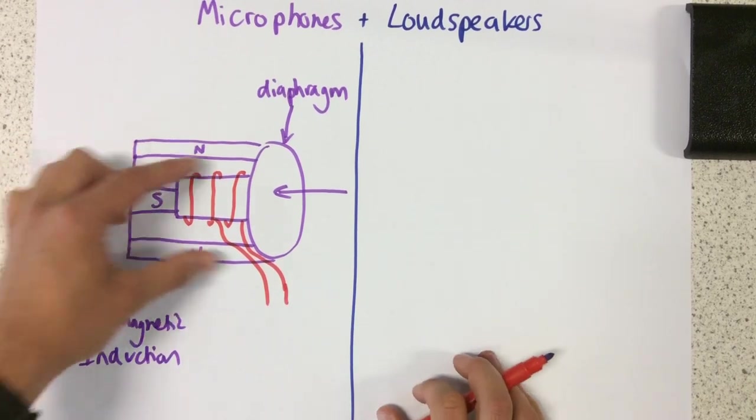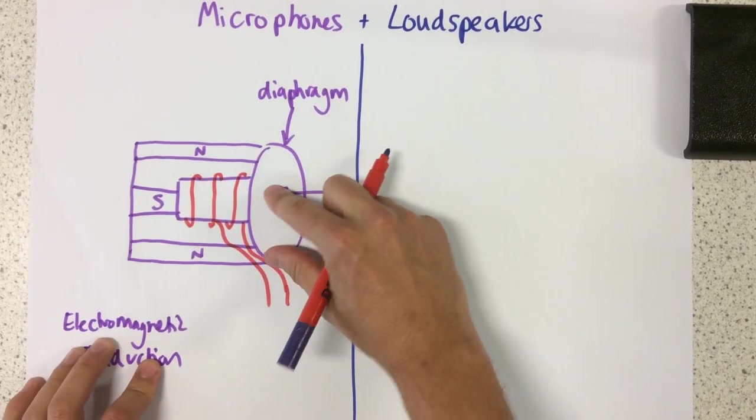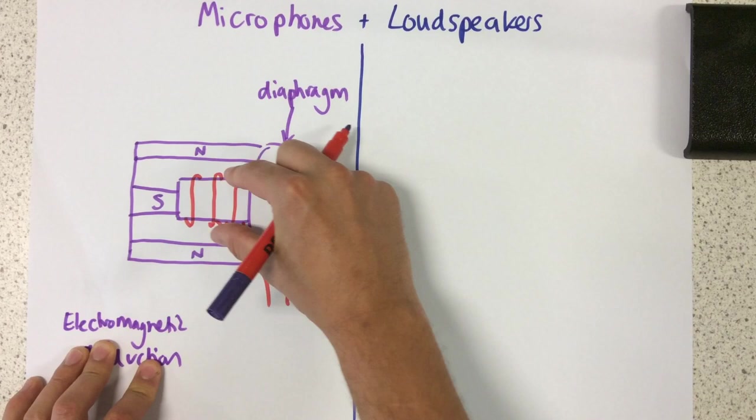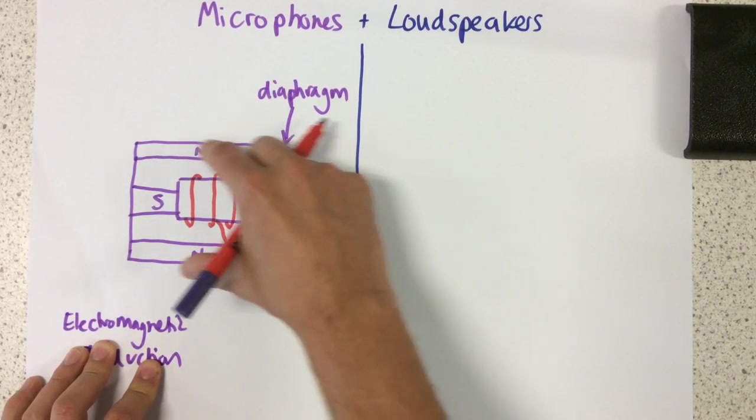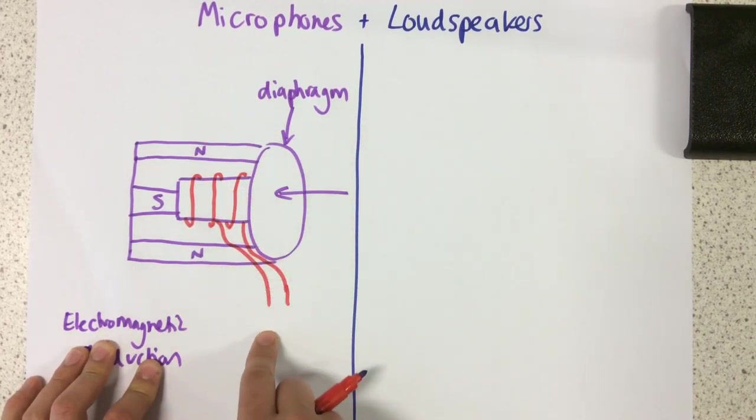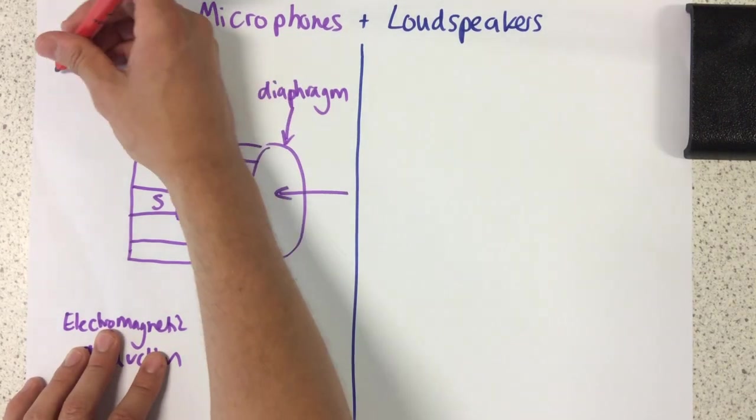That just means that we can create a current. Because as the diaphragm moves, the coil of wire moves within this magnetic field, allowing a current to be established.